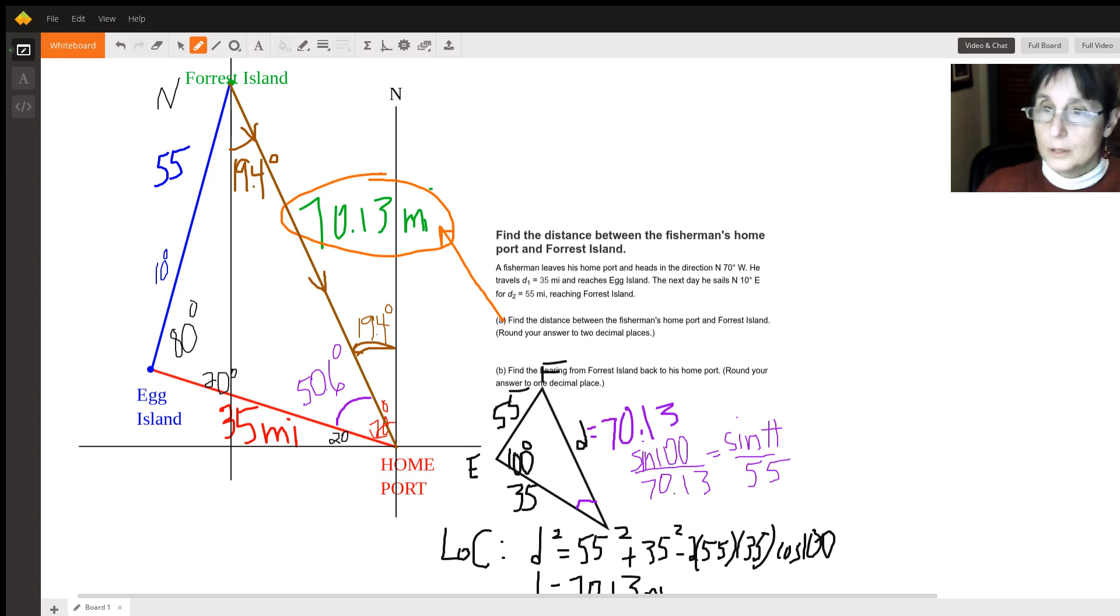Now we have our answer because if he starts from south, if he starts from south and he moves 19.4 degrees toward the east, that's his bearing home. So the answer to part B, his bearing is starting from south, we're going to move 19.4 degrees toward the east, and that is the answer to part B.